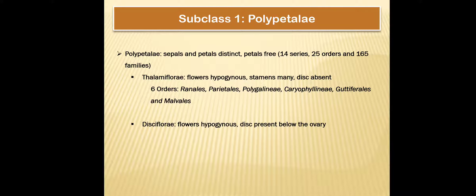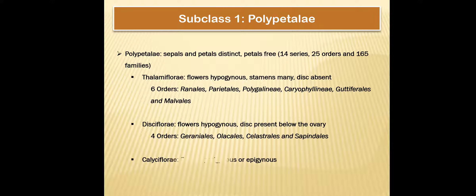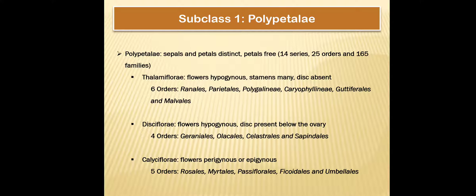Next is Disciflorae, where the characters considered are flowers hypogynous and disc present but below the ovary. There are four orders: Geraniales, Holyceales, Celastrales, and Sapindales. Then Calyciflorae, where flowers are perigynous or epigynous, divided into five orders: Rosales, Myrtales, Passiflorales, Ficoidales, and Umbellales — giving a total of 15 orders.